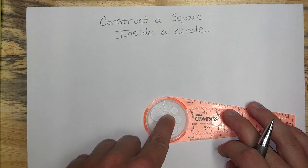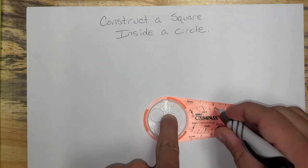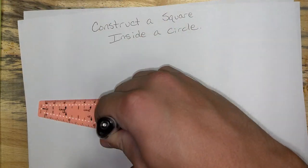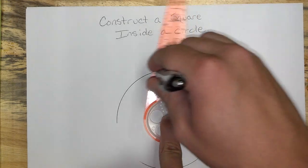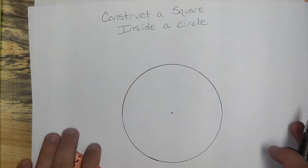Create a decent-sized circle. Remember, we're creating a shape inside of it, so we need to have some room to work. I'm going to make mine with a 2-inch radius. There we go. There's my circle.